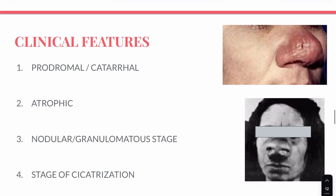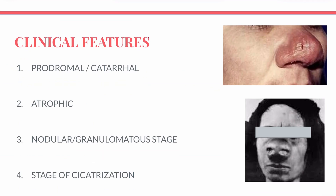The disease progresses in four stages. The first is the prodromal or catarrhal stage, where there is congestion of the nasal mucosa and the patient complains of a runny nose — it can be a purulent rhinorrhea. It is very commonly mistaken for common cold at this stage, as it lacks the diagnostic features needed to clinch the diagnosis.